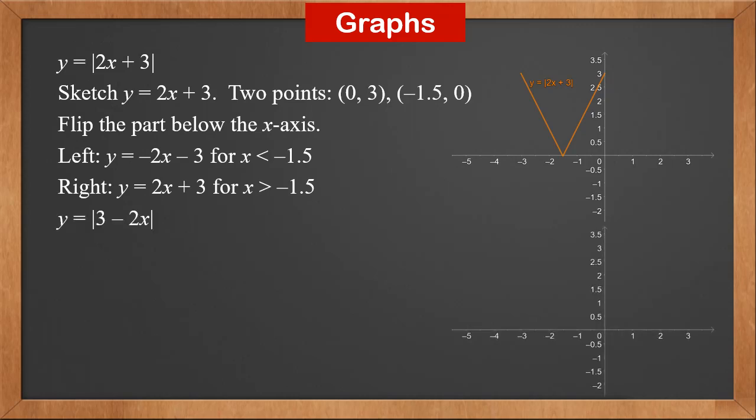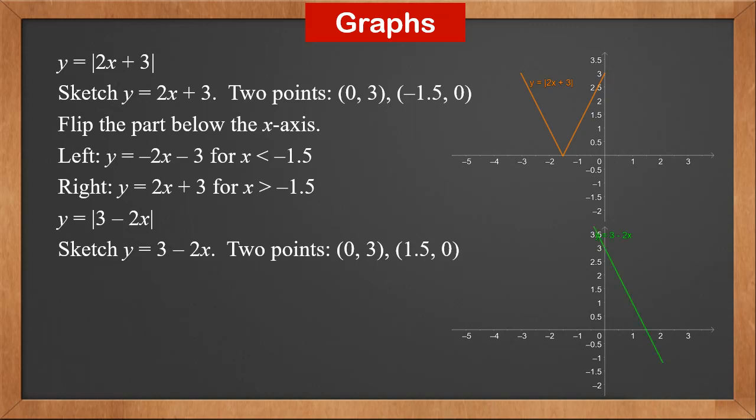Next, y = |3 − 2x|. First, we sketch y = 3 − 2x. We find 2 points on the line: (0, 3) and (1.5, 0), and connect them. This is the line y = 3 − 2x. Since modulus can never be negative, we flip the part below the x-axis. This gives the graph of y = |3 − 2x|.